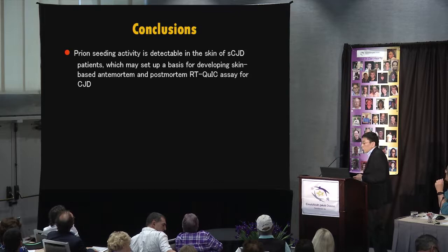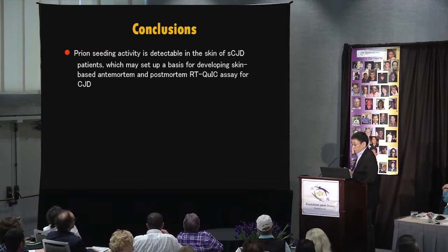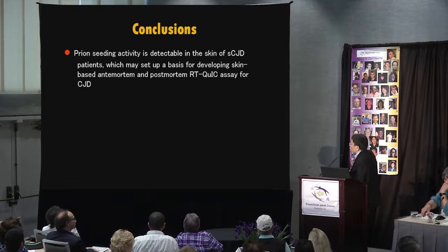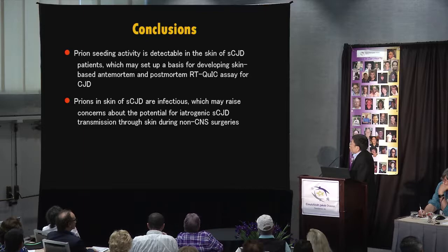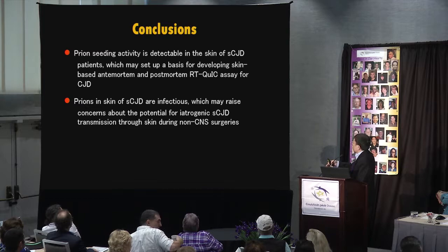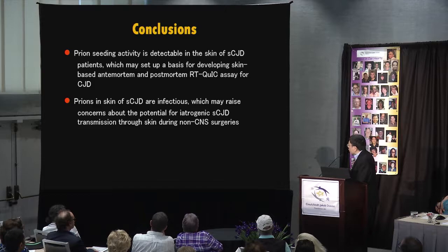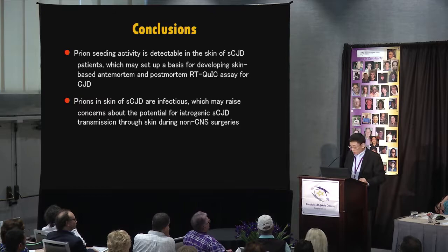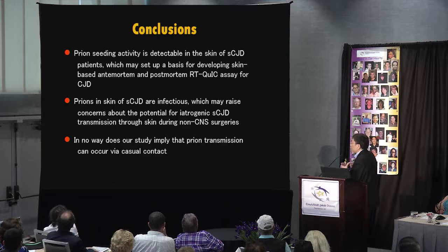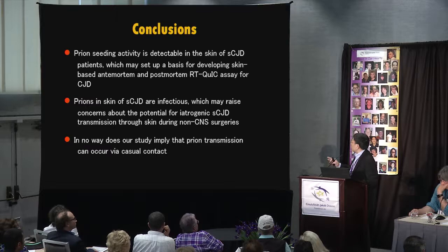To summarize: prion seeding activity is detectable in the skin of CJD patients, which may provide a basis for developing skin-based ante-mortem and post-mortem RT-QuIC assays for CJD. The prions in CJD skin are infectious, at least in animal models, which raises concerns about potential iatrogenic CJD transmission through skin during non-CNS surgeries — a very serious concern. Importantly, our study does not imply that prion transmission can occur via casual contact.